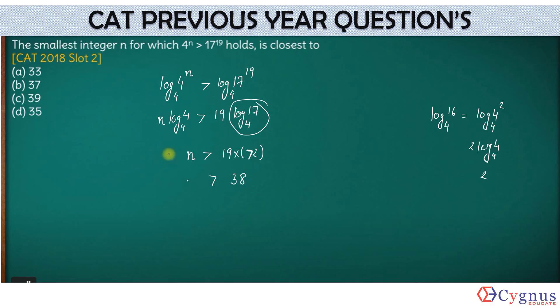So n has to be greater than 38. Now it can be 39, 40, anything, but you're looking for the smallest integer n for which this will hold true, is closest to. So any integer greater than 38 would be, out of these four options, the smallest one would be 39. For me, the answer becomes 39.